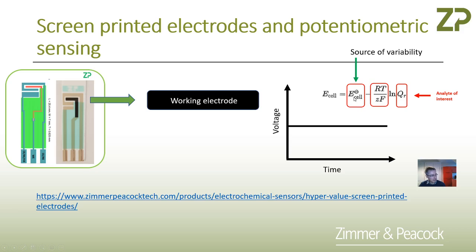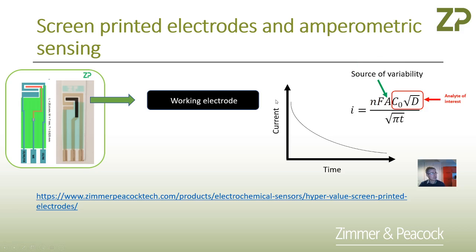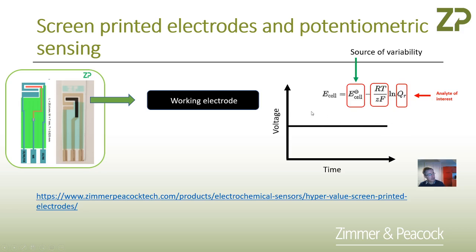That variability is not explicit to screen printed electrodes — it's just quite a sensitive parameter in general, even with other fabrication techniques. When doing amperometric measurements, the electrode area clearly appears in the equation, but it's much more subtle in potentiometric sensors. I think at least two things influence that offset value: the electrode surface and the electrolyte of the solution you're testing. It's quite a sensitive parameter and hard to deal with.